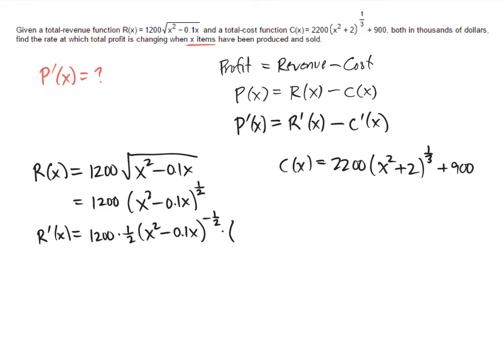But that's just half of the extended power rule. The second half of the extended power rule is that I have to take the derivative of that inside function. The inside function is x squared minus 0.1x.